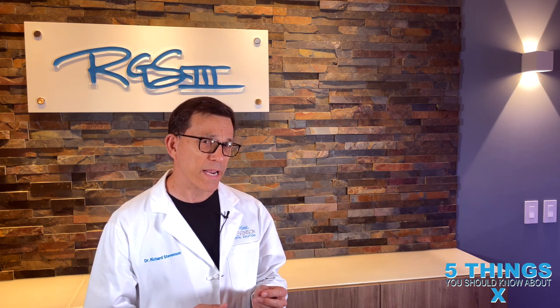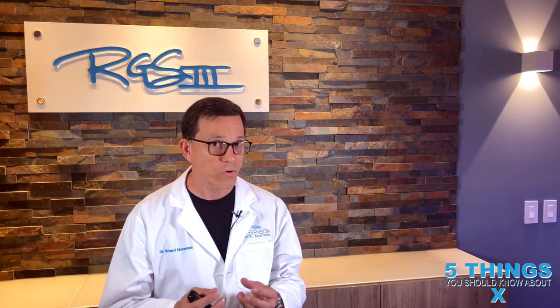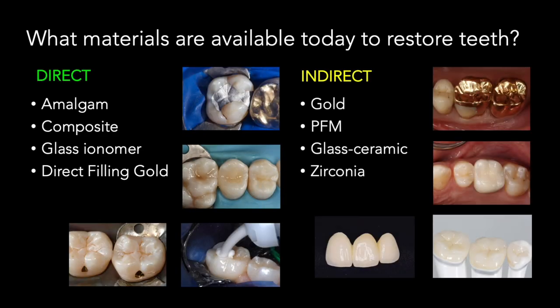In the indirect category we have restorations that are made by a dental laboratory. Now I use that term 'restoration' to mean crown, onlay, veneer — anything that we as a dentist do to restore your teeth. So indirect restorations of gold, porcelain fused to metal, glass ceramic, or zirconia are all being used today in dentistry.